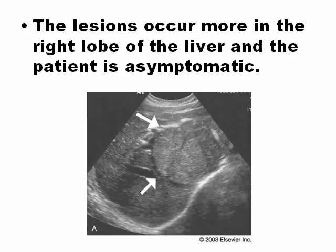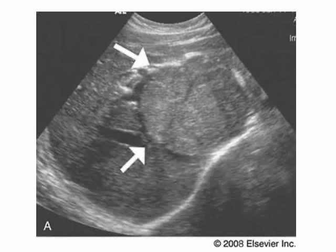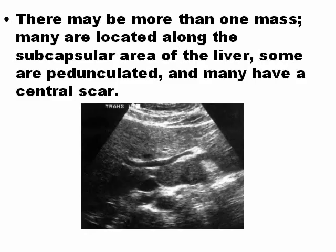In general, the lesions are isoechoic. The patient is asymptomatic, but sometimes they are very large and produce compression of other normal structures, like the porta hepatis. Sometimes there is more than one mass. Sometimes they also have a central scar or calcification in the center of the nodule. But in general, they are isoechoic and not easy to differentiate from normal parenchyma.